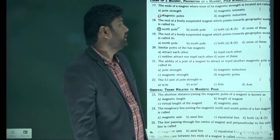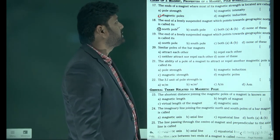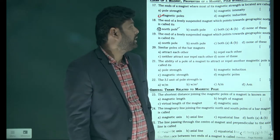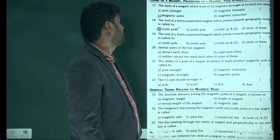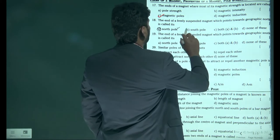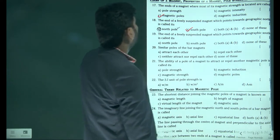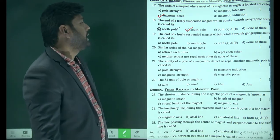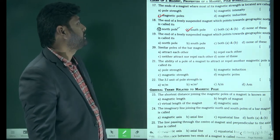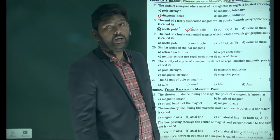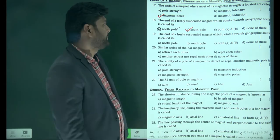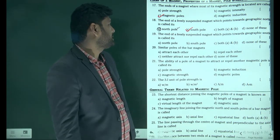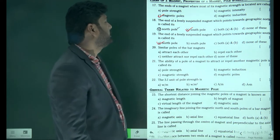The ends of a freely suspended magnet which point towards the geographic north is called the south pole, because south and north attract. The ends of the freely suspended magnet which point towards the geographic south is called the north pole of the magnet.